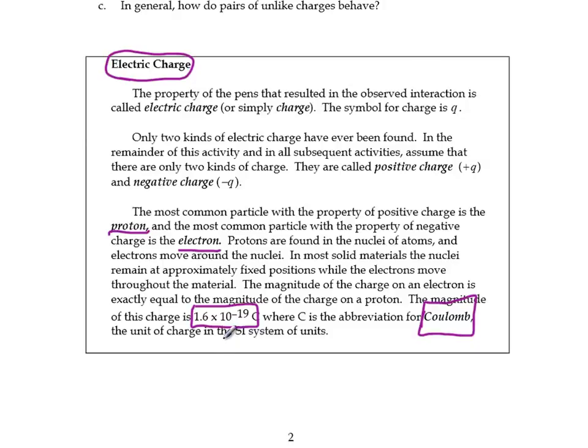So one proton or one electron has this much charge. A proton is positive this much charge, an electron is negative this much charge. But you should be familiar with these: Q is the symbol for charge, lowercase q is the symbol for charge, and it can be positive or negative. And the unit of charge is the coulomb.